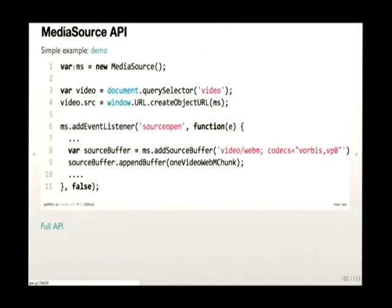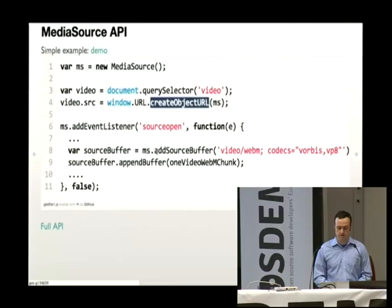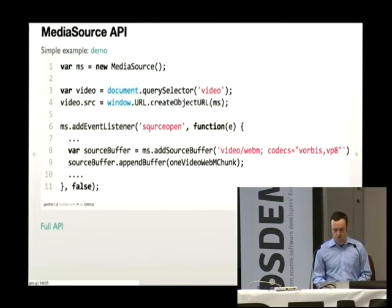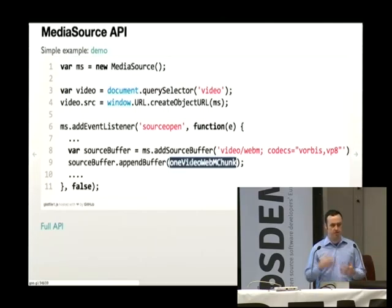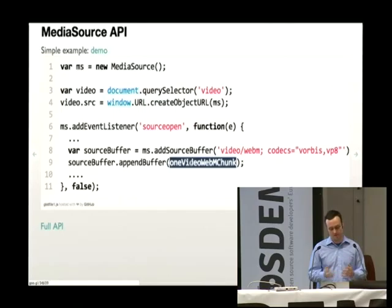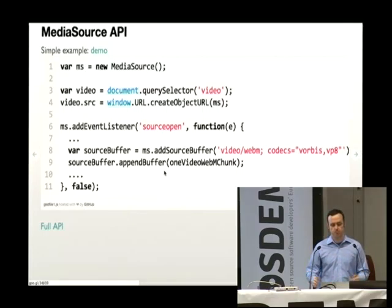First, the MediaSource API. You basically create a new MediaSource, create a new video tag, and set the source to an object URL which is the MediaSource object you've created. You add a source open event and then you're able to append a buffer. What's neat is that you can append data from any source you grab — an XHR request, an encoder in your browser generating WebM-encoded video content, or data pulled over a peer channel. So there's a lot of flexibility in sequencing video content.